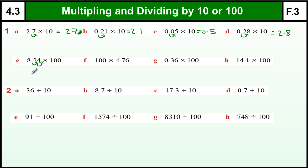So 8.24 becomes 824.0, but again we don't write the point 0 so it's just 824.